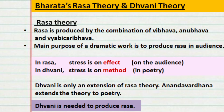The next topic is a comparison between Bharata's Rasa theory and the Dhvani theory. In the earlier video, we saw that Rasa is produced by the combination of Vibhava, Anubhava, and Vyabhicharibhava. The main purpose of a dramatic work staged on a stage is to produce Rasa in the audience. What is stressed in the Rasa theory is whether an effect — happiness, sadness, or any other emotion — is created in the audience. Whereas Dhvani is not focusing on the effect; Dhvani is focusing on the method.